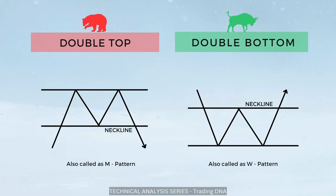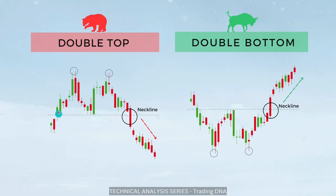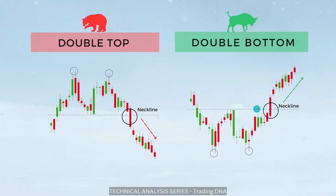Let's see this with an example for clear understanding. The stock is moving up, took resistance at a point, came down to the neckline, and again took resistance at the same zone — indicating high selling pressure. Once it came down and broke the neckline, you can make an entry and short the stock, expecting the price to go down. For a double bottom, the stock price is in a downtrend, took support, pulled back, came to that zone a second time, got reversed, and when the neckline was broken, a trader can enter long and expect the market to go higher.